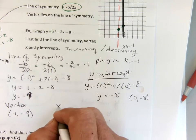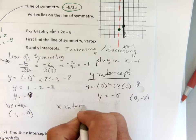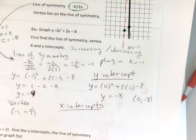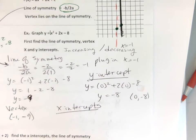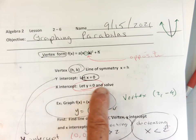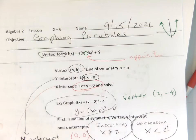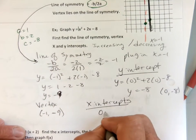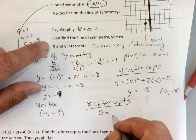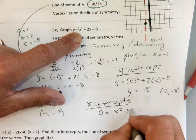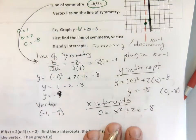X-intercepts — my notes say let y equal 0 and solve. So I'm going to let y equal 0: 0 equals x squared plus 2x minus 8.